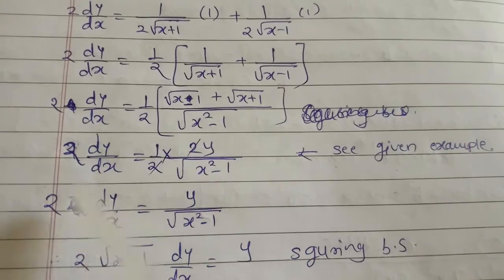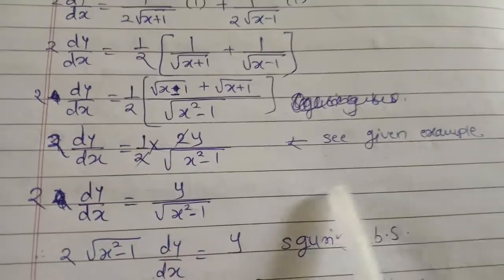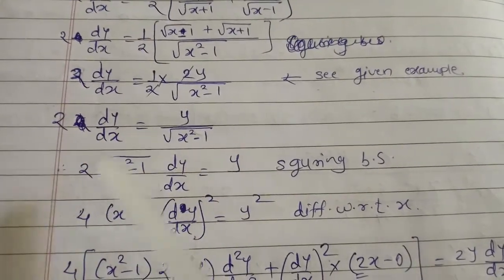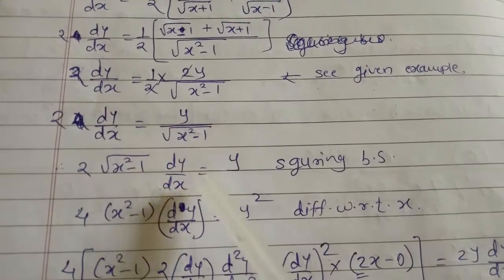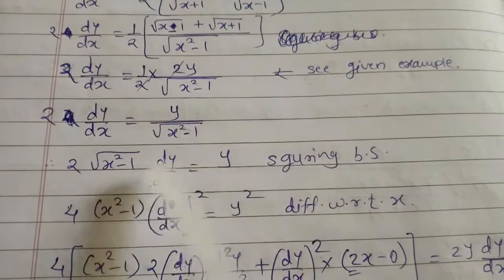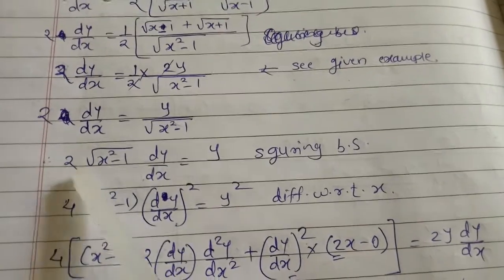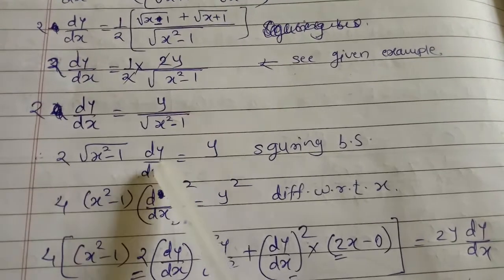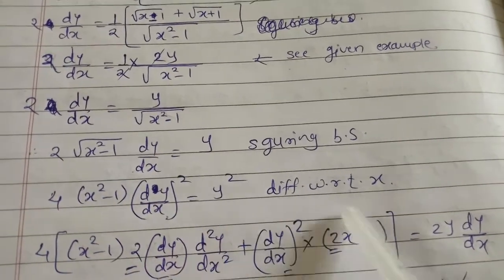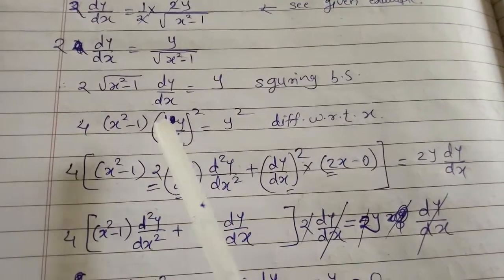Moving √(x²-1) to the left side: 2√(x²-1)·dy/dx = y. Squaring both sides: 4(x²-1)·(dy/dx)² = y². Now differentiating both sides with respect to x again.